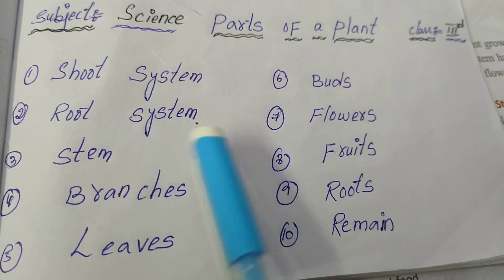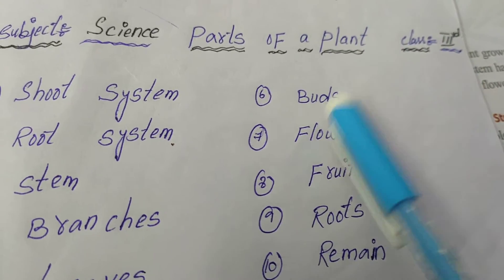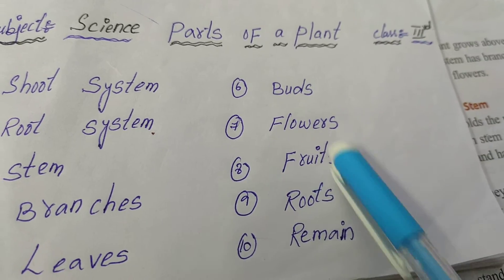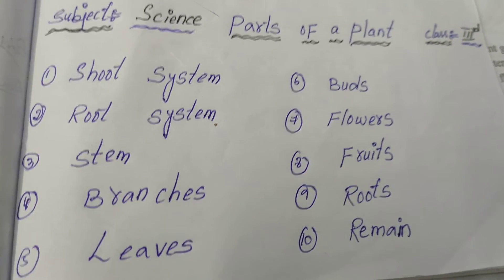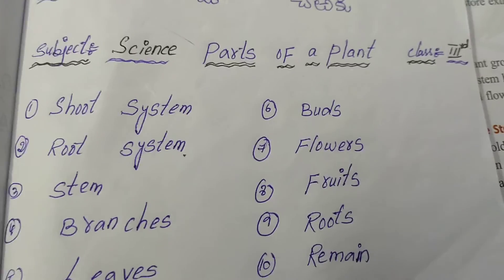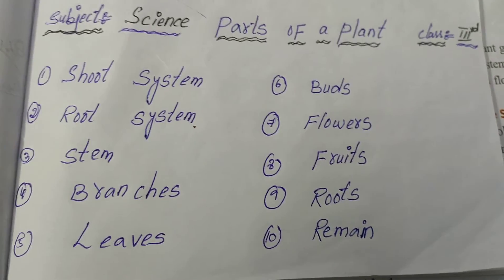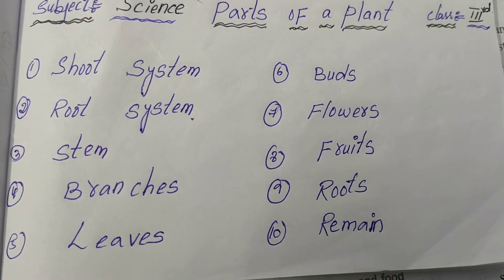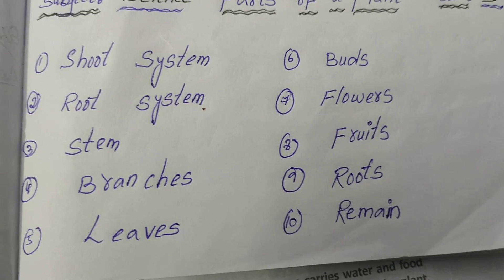Shoot system, root system, stem, branches, leaves, buds, flower, fruit, root, and remain. Today's homework is only these hard words. Write them only one time neatly and submit in your group. Thank you, students.